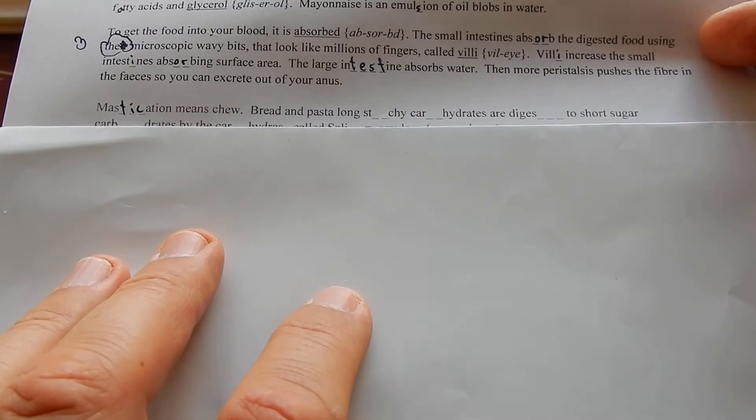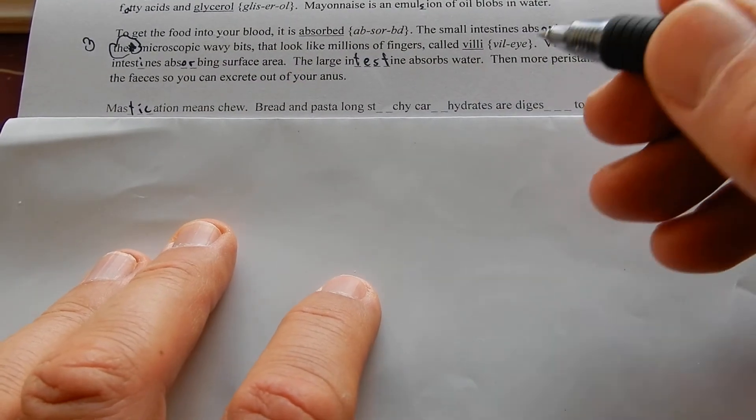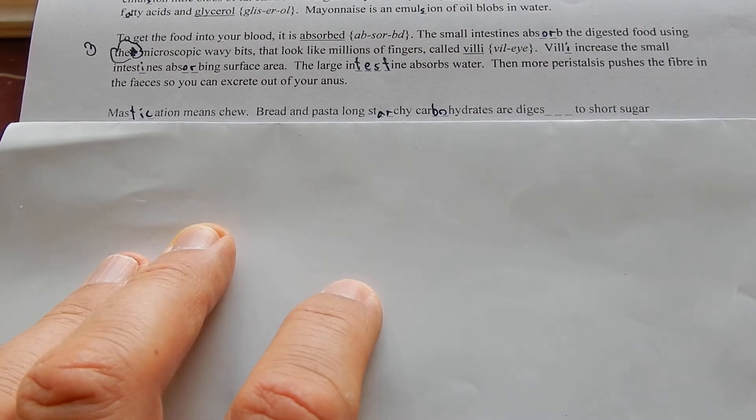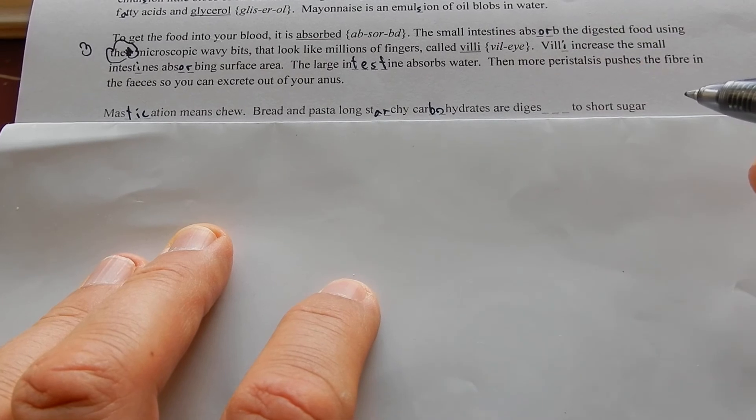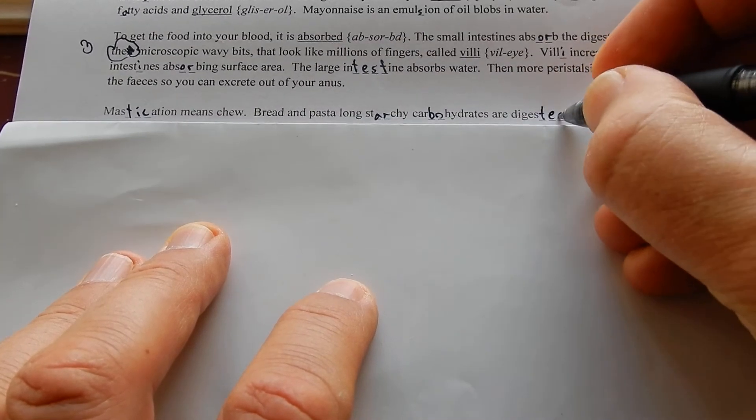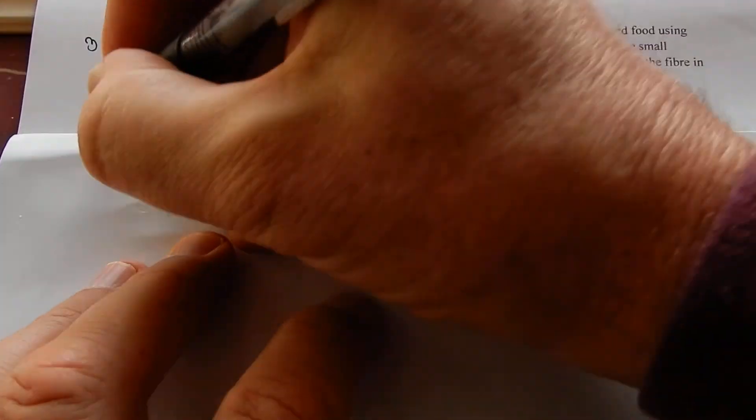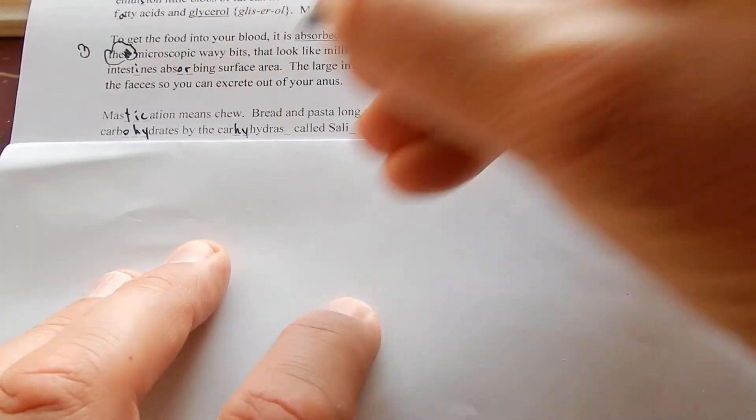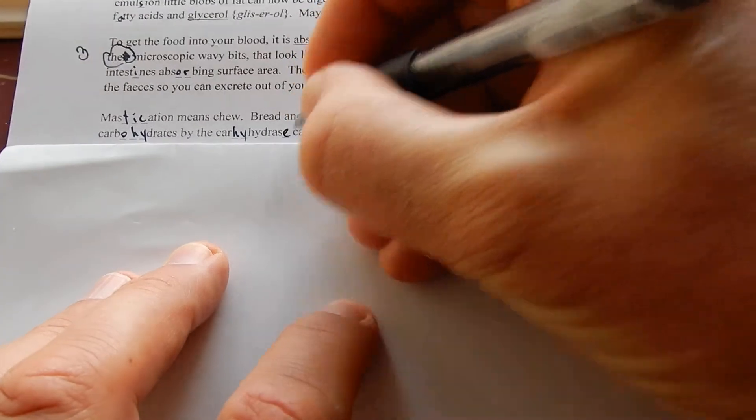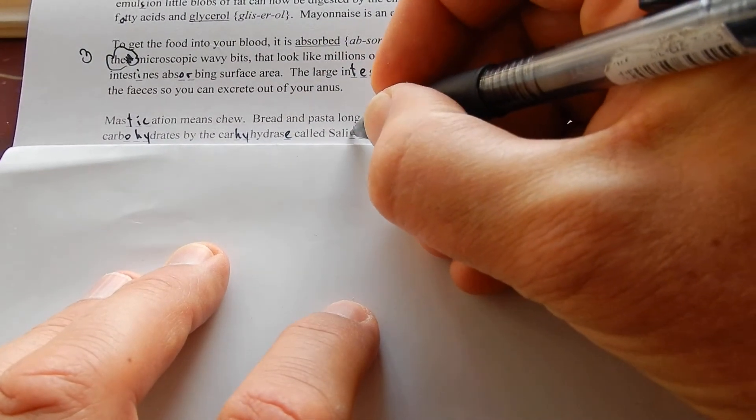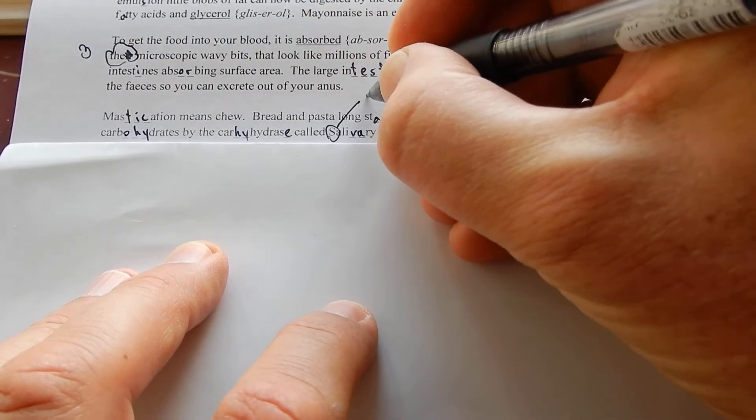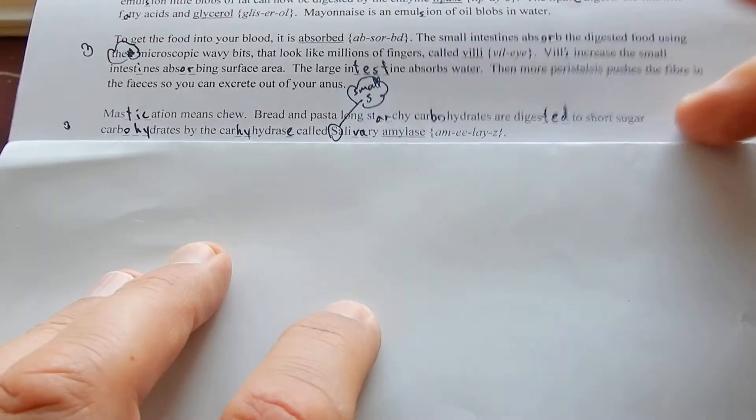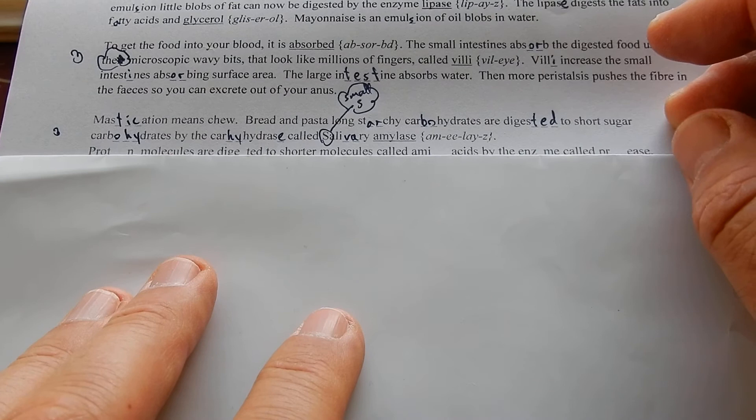Mastication means chew. Bread and pasta, long starchy carbohydrates, are digested to short sugar carbohydrates by the salivary amylase.